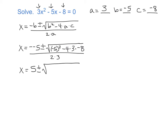Important: b² will never, ever be negative. Whether b is negative or positive, squaring it always gives a positive result. Don't let your calculator mislead you — negative 5 squared is positive 25, not negative 25. Then minus 4 times 3 times negative 8. Calculating 4 times 3 times negative 8 gives negative 96, all divided by 2 times 3, which is 6.